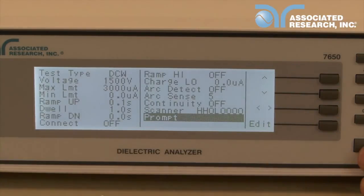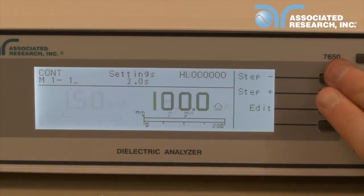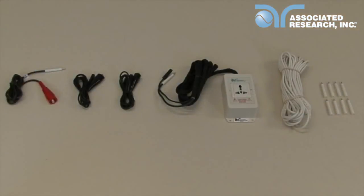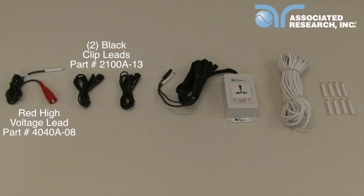Finally, we're going to show you how to connect the 7650 to a DUT and run the test sequence. You're going to need the following accessories: the red high voltage lead, two black clip leads. You can also use the universal style adapter box instead of the clip leads.